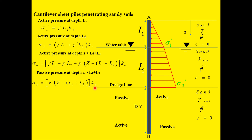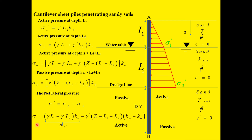The net pressure sigma prime is the active pressure minus the passive pressure. Simplifying, sigma prime equals sigma 2 minus gamma_prime × (Z − L1) × (Kp − Ka), where L equals L1 plus L2. Rearranging these terms gives the net pressure equation used going forward.